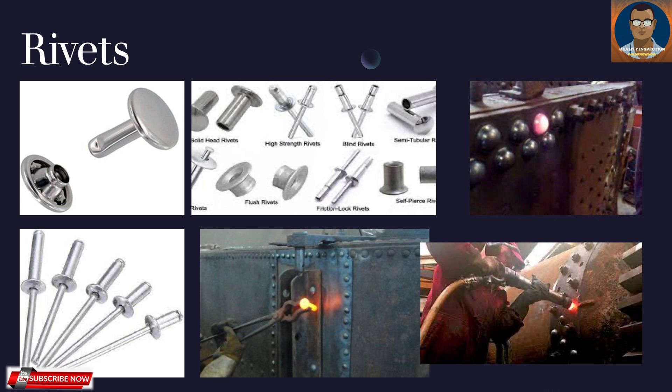Why use a rivet instead of welding? When two components are welded together, only the exterior of the components are joined. On the other hand, using a rivet connects the two components from inside, thus allowing for a stronger and more durable joint. For automotive use, plastic pop rivets are ideal. Plastic and nylon pop rivets are commonly used in automotive manufacturing because they are stronger than aluminum, lightweight, and non-corrosive. They are also useful for joining painted surfaces because they are less likely to mark the surface than metal rivets.